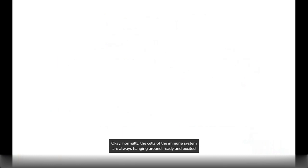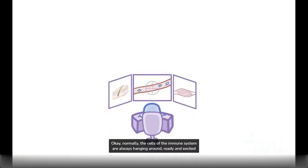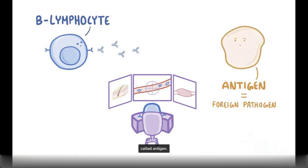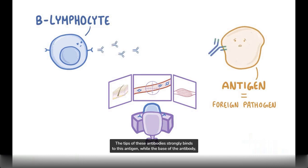Normally the cells of the immune system are always hanging around, ready and excited to spot and fight against anything foreign that could cause harm inside the body. B lymphocytes produce antibodies against a specific part of these foreign pathogens, called an antigen. The tips of these antibodies strongly bind to this antigen, while the base of the antibody called the constant region gets recognized by complement proteins.